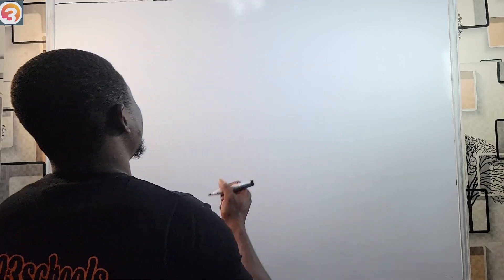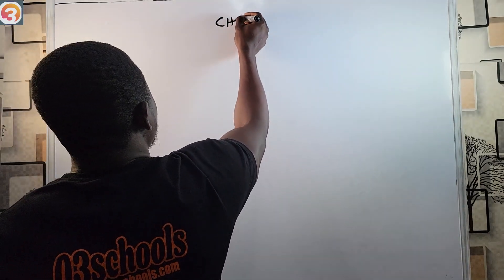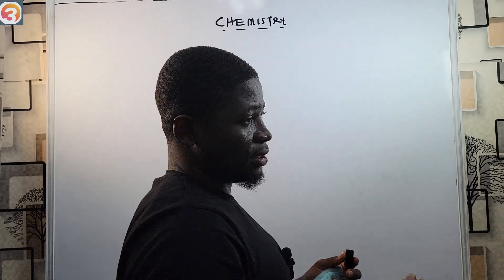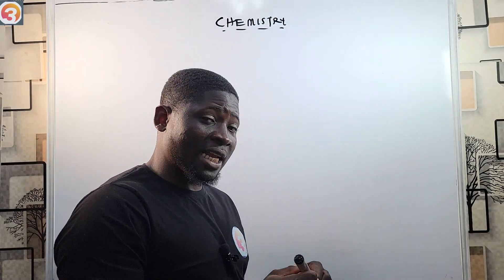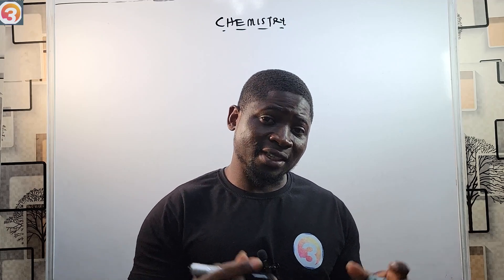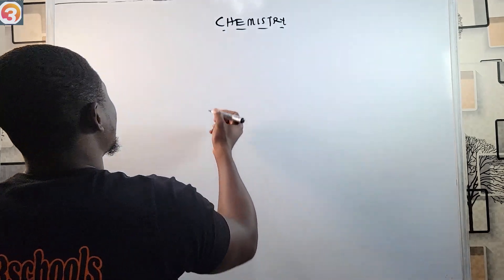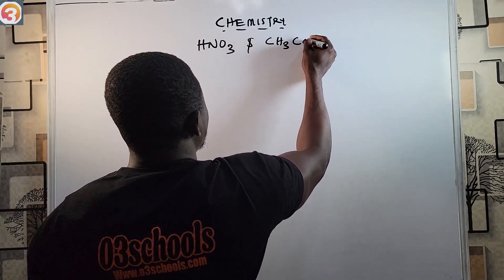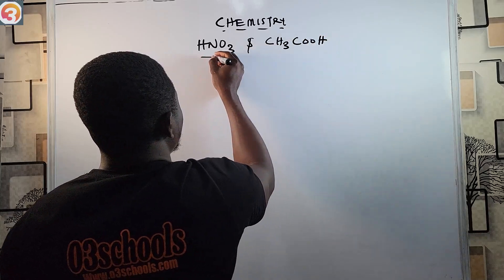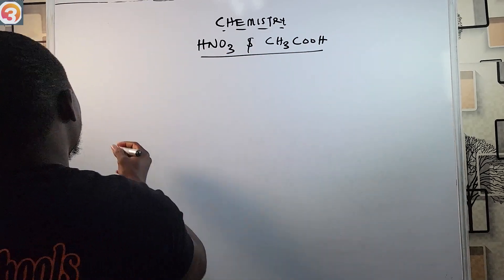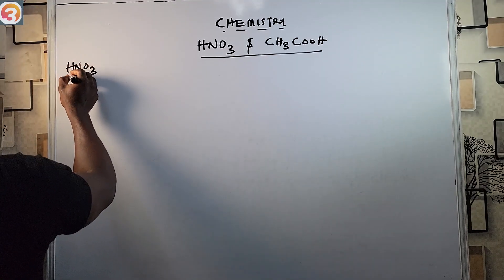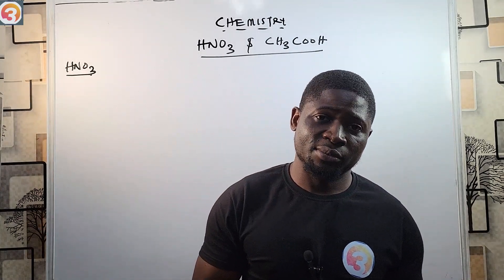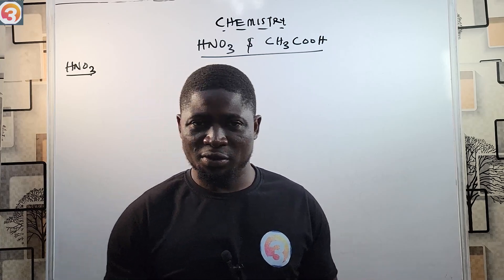Hello guys and welcome back to another episode of chemistry. We're still looking into the uses of acids and bases. Today and in the previous class we saw the use of hydrochloric acid and tetraoxosulphate(VI) acid, but in this class I'm going to be looking at the uses of HNO3 and CH3COOH. I'll begin with HNO3 and after we're done we'll go to CH3COOH. The uses are very important — note them, because you can be asked a question from just one of the uses.